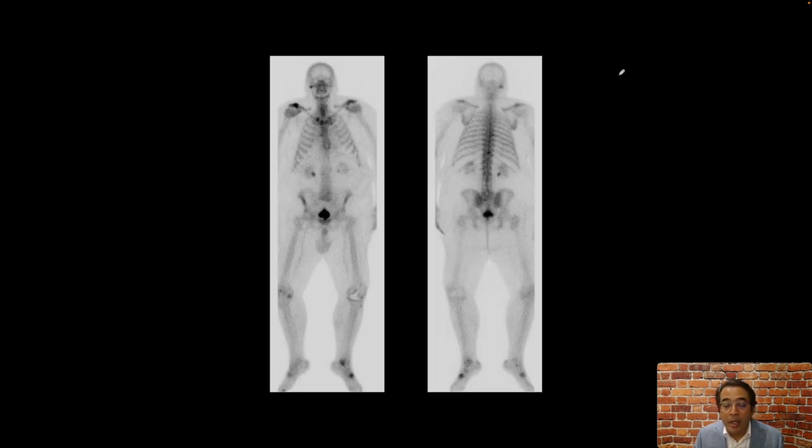Here's our next patient, another patient with prostate cancer. On their whole body bone scan, we don't see a pattern of osteoblastic bone metastasis. There are no multiple scattered foci of intense uptake to suggest osteoblastic bone metastasis, but there is a subtle focus of increased uptake in the midline in the lower thoracic spine.